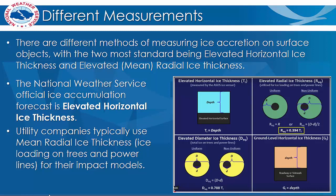The two most standard ice accumulation measurement techniques are elevated horizontal ice thickness, which is directly measuring ice thickness on an object that is off the ground, and the second is called elevated radial ice thickness, which is a technique of measuring ice around a branch or power line.